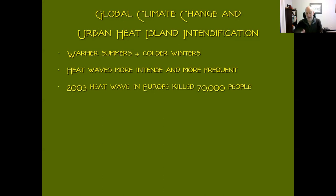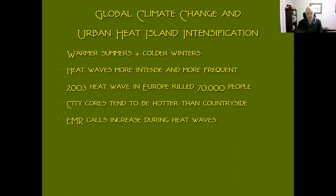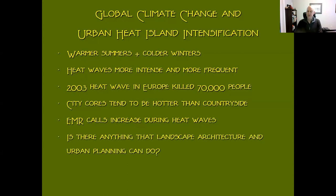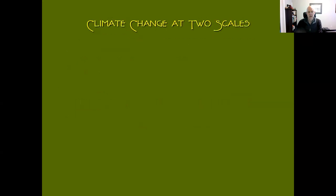We're finding that heat waves are more intense and happening more frequently. In 2003, Europe wasn't prepared for a heat wave. Estimates suggest somewhere around 70,000 people died prematurely because their cities were designed for northern climates and couldn't deal with really hot weather. City cores tend to be hotter than countryside. Emergency medical response calls increase during heat waves. So the question is: can landscape architecture and urban planning do anything about this?